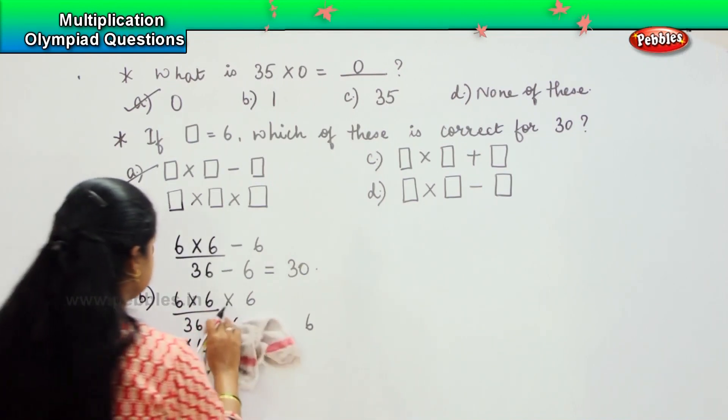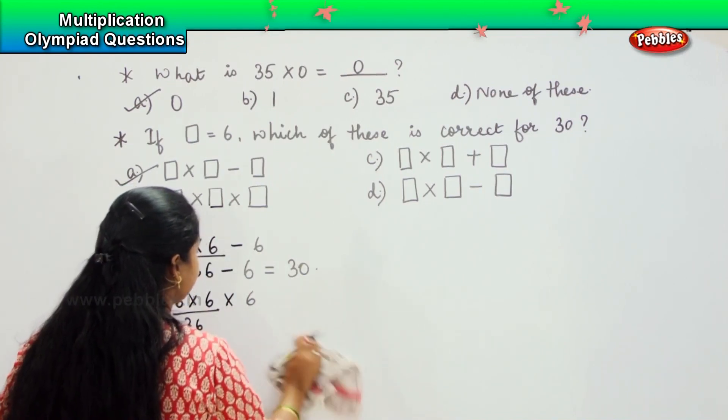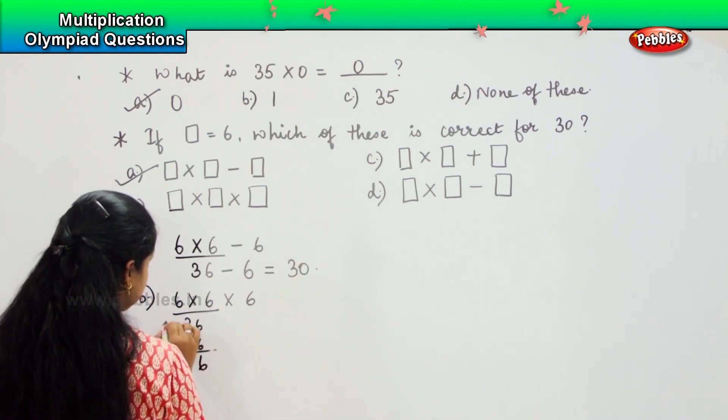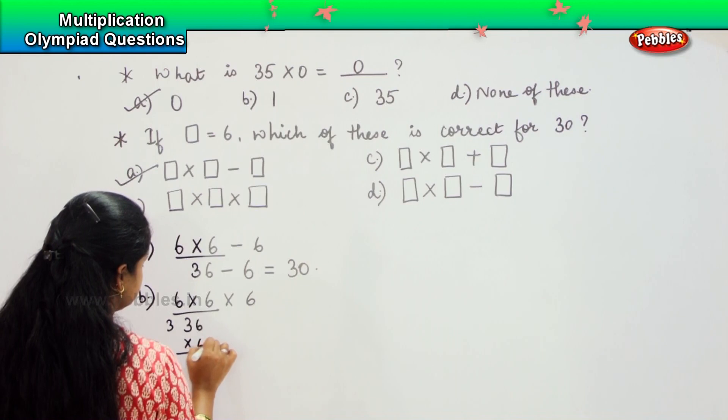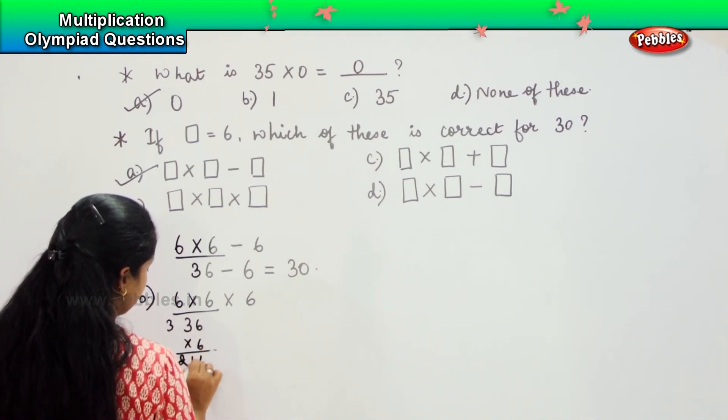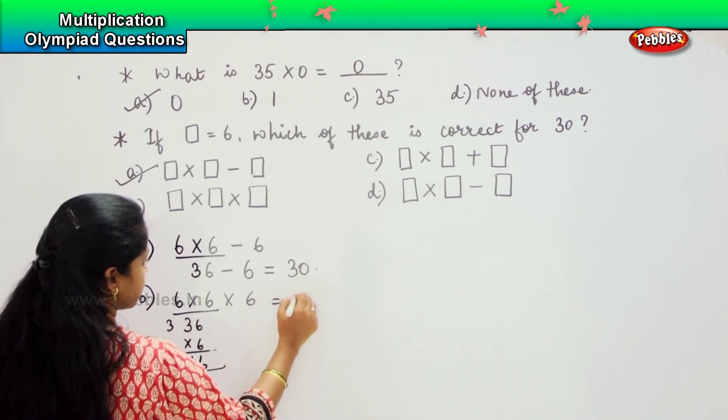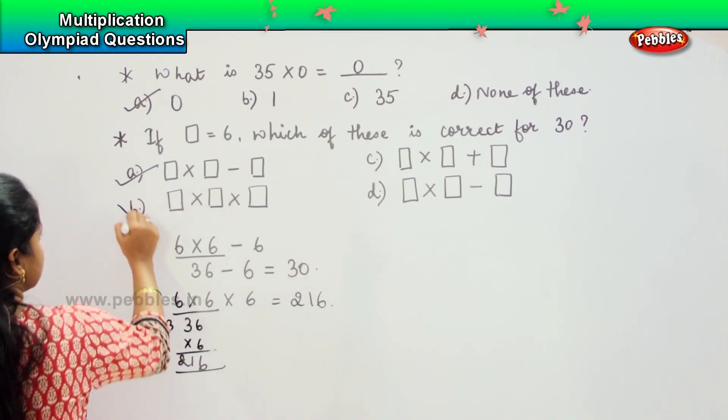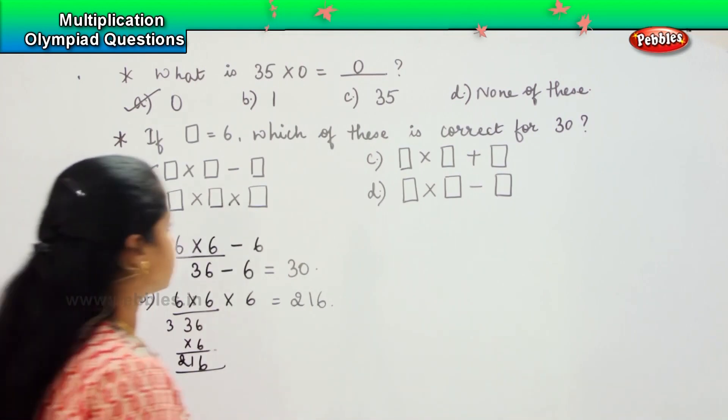We shall erase this one so that it is easy for us to do the calculations. So 6 sixes are 36, 3. 3 sixes are 18 plus 3, 19, 20, 21. So which means the answer of this is 216. Is this what they are asking for? No. So this is not my right answer.